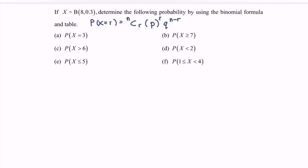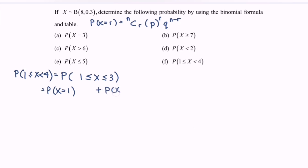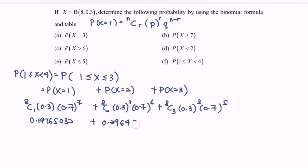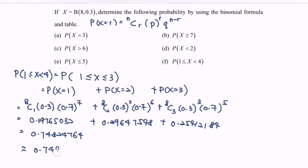For question f, we find P(1≤X<4). Since this is a discrete distribution, we modify: P(1≤X<4) = P(1≤X≤3) = P(X=1) + P(X=2) + P(X=3). Substituting into the binomial formula and summing with a calculator gives approximately 0.7482.